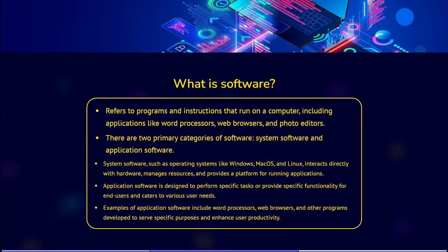There are two primary categories of software: system software and application software. System software, such as operating systems like Windows, macOS, and Linux, interacts directly with the hardware, managing resources and providing a platform for running applications.